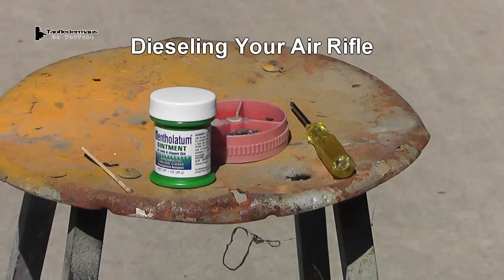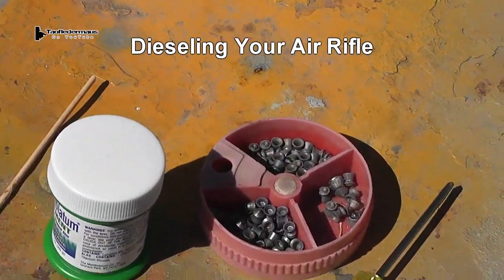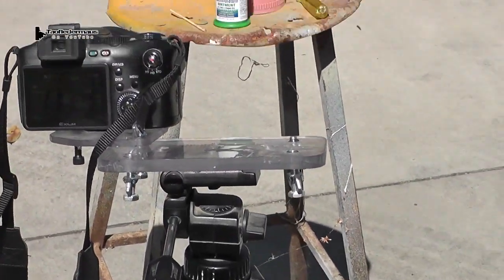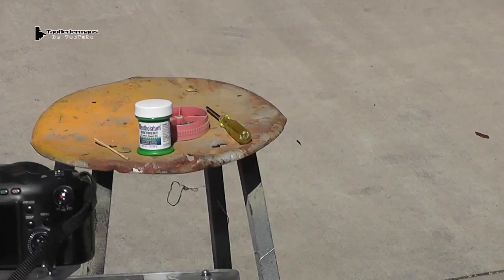Now dieseling is when you put a flammable substance behind the pellet after you load it, and as you shoot it the pressure increases so much that it causes this flammable material to combust or detonate. It's supposed to make the gun more powerful.